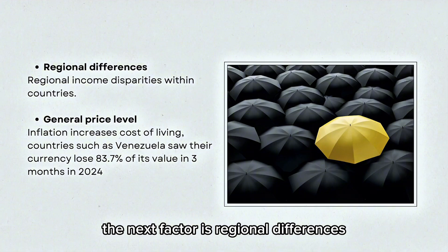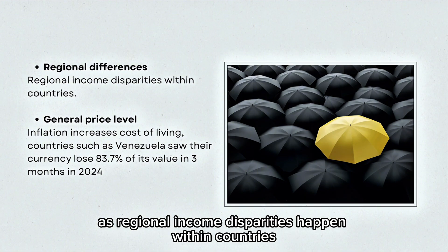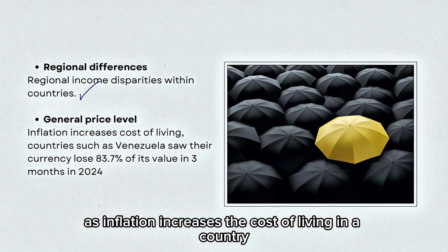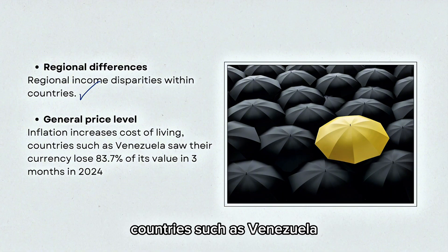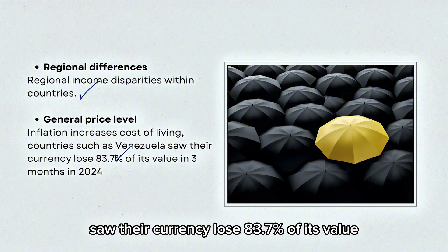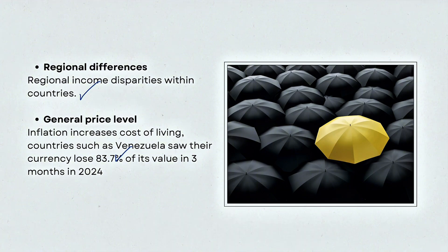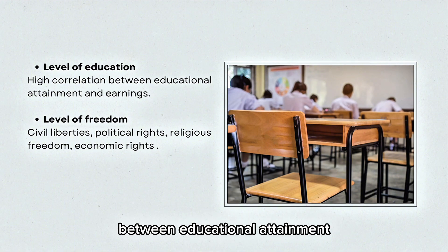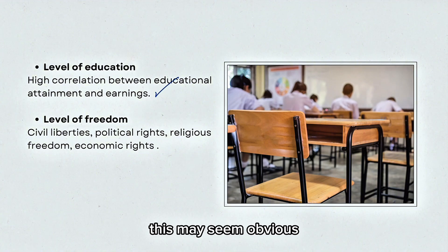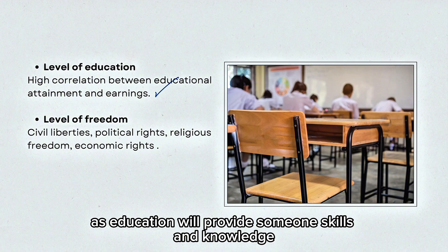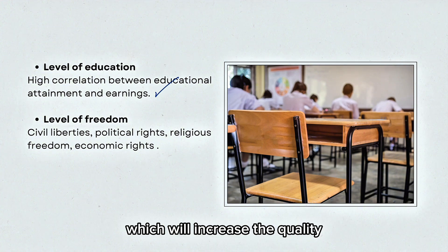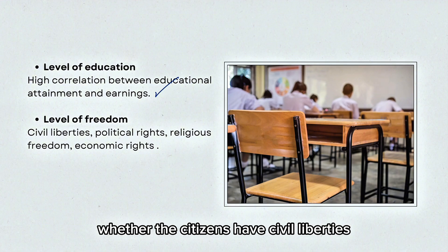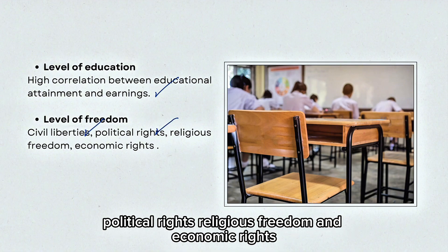Regional income disparities also happen within countries. The general price level is an important factor, as inflation increases the cost of living — for example, Venezuela saw its currency lose 83.7% of its value in just three months in 2024. The level of education offered within countries is also significant, as there is a high correlation between educational attainment and earnings, since education provides skills and knowledge that increase productivity in the workforce. Lastly, the level of freedom — whether citizens have civil liberties, political rights, religious freedom, and economic rights.